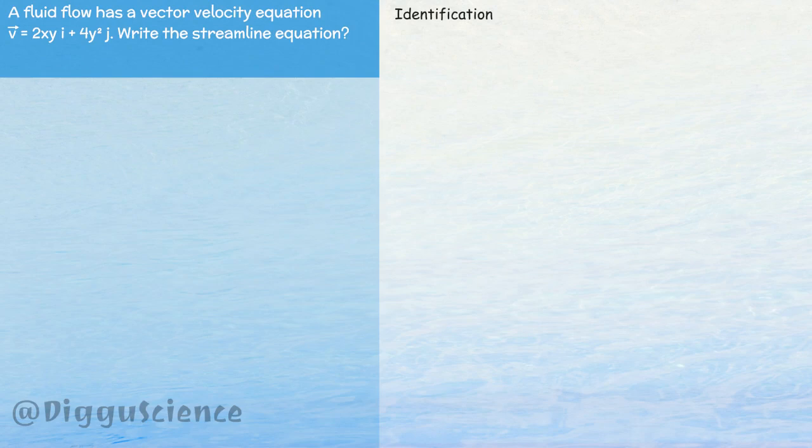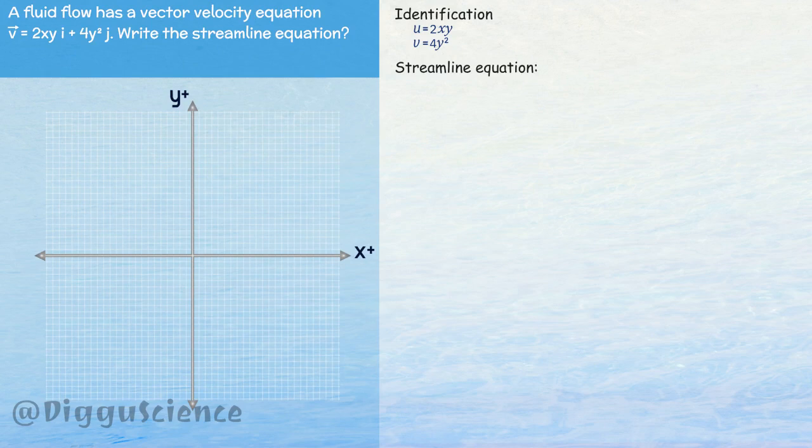The first stage is identification. The velocity component on the x-axis u is equal to 2xy. Velocity component on the y-axis v is equal to 4y squared. So now we can calculate the streamline equation. Because u and v only contain x and y variables, we can draw streamlines in two-dimensional coordinates.